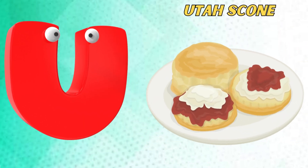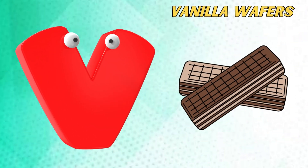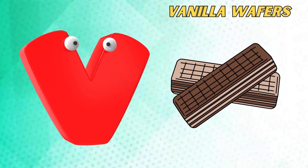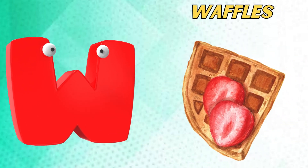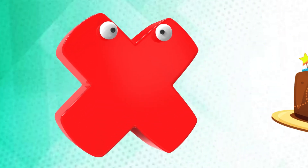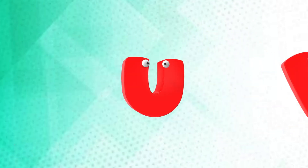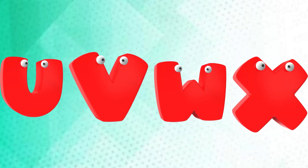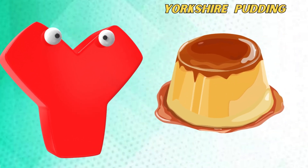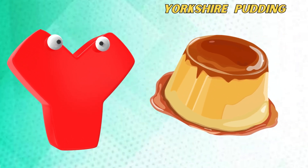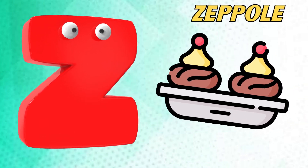U is for Utah Skull. V is for Vanilla Wafers. W is for Waffles. X is for X-Moss Cake. Y is for Yorkshire Pudding. Z is for Zeppel.